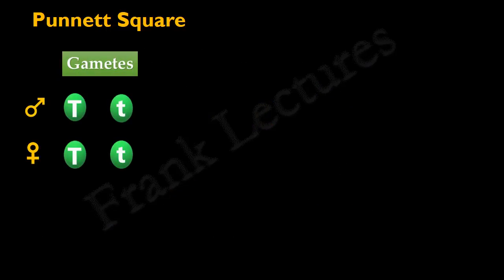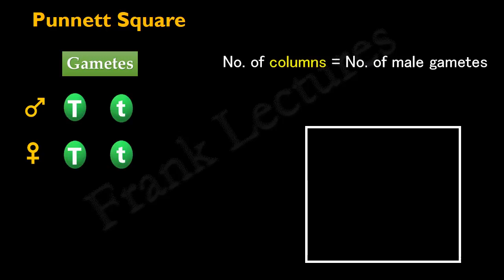Now, draw a square. Inside this square, we have to draw columns and rows. Now the question here is, how many columns and how many rows? The number of columns is equal to the number of gametes produced by the male parent, and the number of rows is equal to the number of gametes produced by the female parent. So, we will have two columns and two rows.